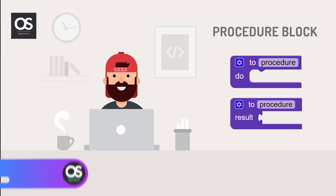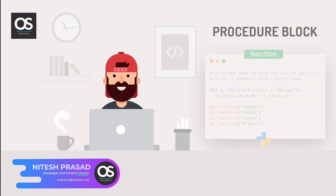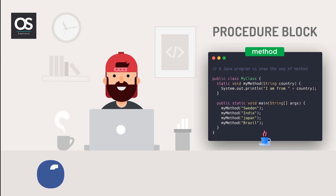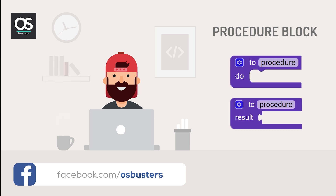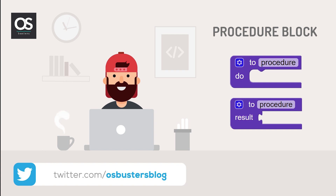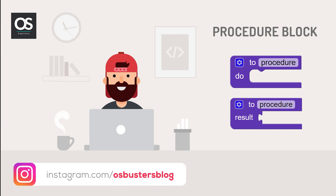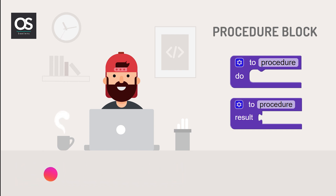Procedure block, as the name suggests, is used to create a custom task which we can use again and again in a screen. Procedure block is similar to a function or a method used in programming. The use of procedure block is not absolutely necessary — we can still make a fully functional app even without it — but using procedure block is a good practice as it highly reduces the number of blocks used and keeps the code clean. So it is preferable to use procedure blocks when the task is carried out again and again in the app.